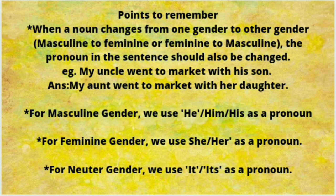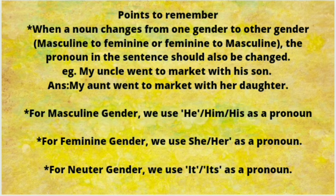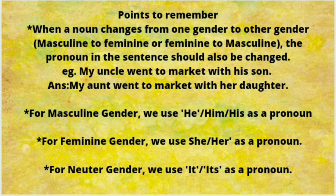You can think of many more examples. When a noun changes gender from masculine to feminine or feminine to masculine, the pronoun in the sentence should also be changed. For example: 'My uncle went to market with his son' changes to 'My aunt went to market with her daughter.' For masculine gender we use he, him, or his. For feminine gender we use she or her. For neuter gender we use it or its.